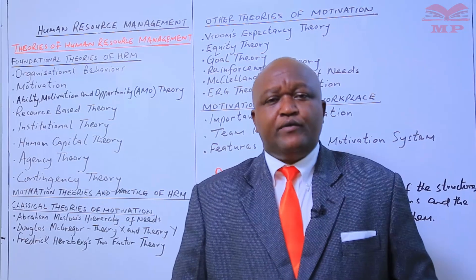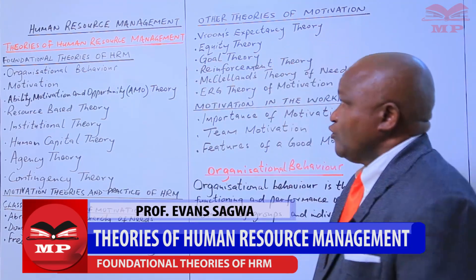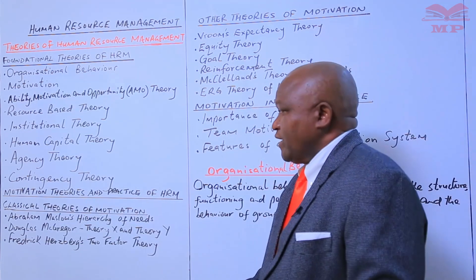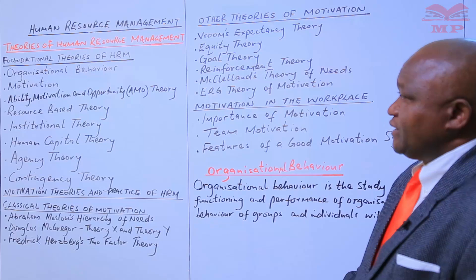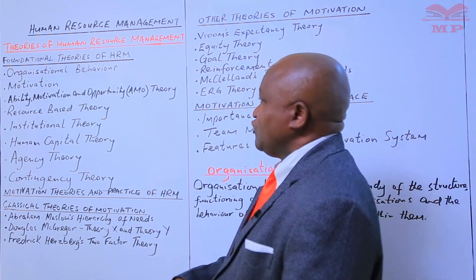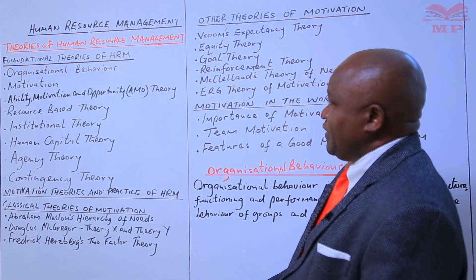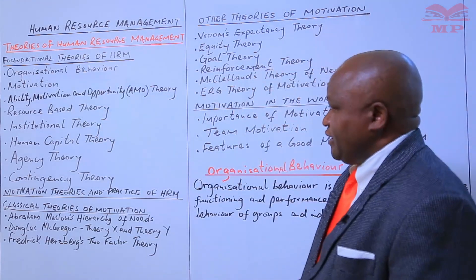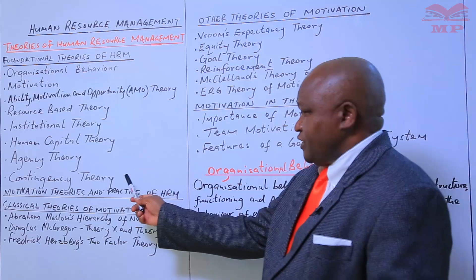Dear learner, welcome to our Human Resource Management subject on the Manifested Publishers learning platform. In our lesson today, we are looking at theories of human resource management. Under the foundational theories of HRM, we shall look at organizational behavior, motivation, ability, motivation and opportunity (AMO theory), resource-based theory, institutional theory, human capital theory, agency theory, and contingency theory.